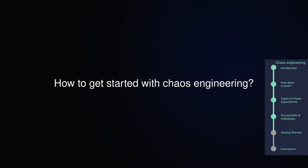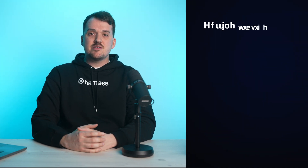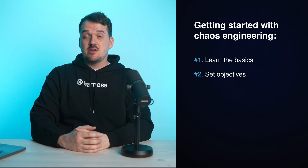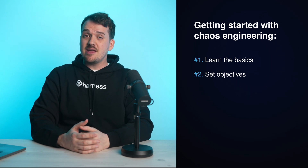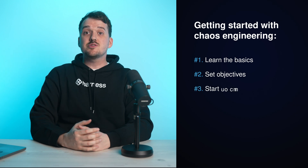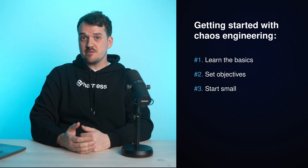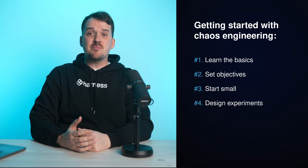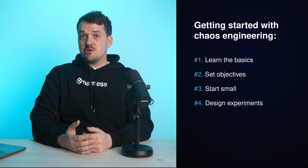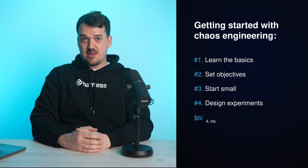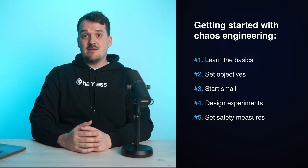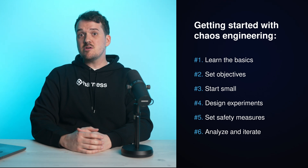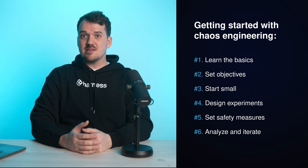Ready to get started with chaos engineering? Here's how. Learn the basics: get familiar with the principles of chaos engineering and understand its goals. Set objectives: define what you want to achieve, whether it's improving redundancy, enhancing failover mechanisms, or optimizing resource allocation. Start small: run your first experiment on a single component or service, simulating network latency or resource exhaustion failures. Design experiments: carefully plan the scope and intensity of each experiment, and ensure you know what to monitor and what the expected outcome should be. Set safety measures: always have a rollback plan if things go wrong. Analyze and iterate: after each experiment, analyze the results and make improvements — consider automating the tests in your CI/CD process — then design your next experiment.